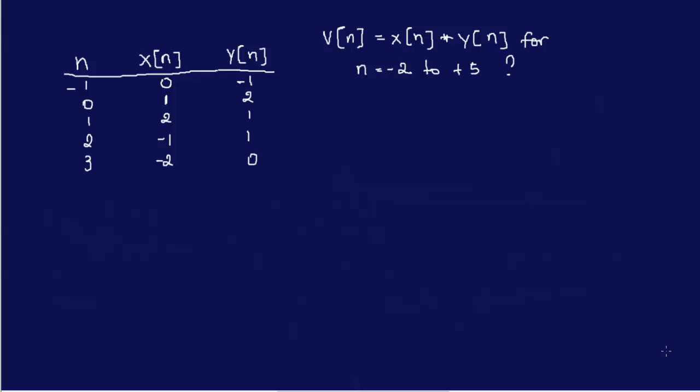For those of you who have the electrical NCS sample exam — what they call it, sample questions plus solutions — this problem is from there. I got the suggestion to solve this problem from one of my subscribers. It's on page 77, problem 17, so you can look that up. The problem says two discrete time signals x of n and y of n are defined as shown in this table, with x of n equal to y of n equal to zero for all values of n less than minus one and for all values of n greater than three. The question is to find the convolution between x of n and y of n.